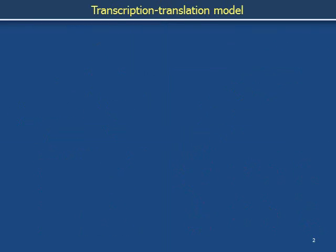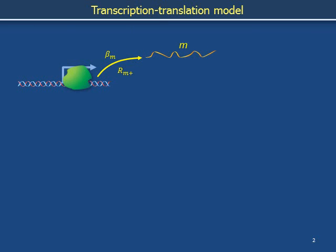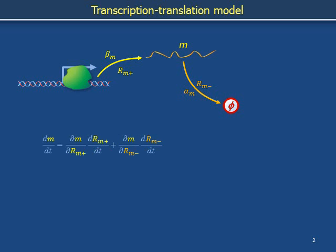We are inside a cell. RNA polymerase can transcribe a gene with rate coefficient beta_m. There are m copies of messenger RNA in the cell, and r_m+ is the number of transcription events that have proceeded since a reference time. Messenger RNA degrades with rate coefficient alpha_m, and the number of messenger RNA degradation events since a reference time is r_m−. The time rate of change of the messenger RNA population is owing in part to transcription events and owing in part to messenger RNA degradation.